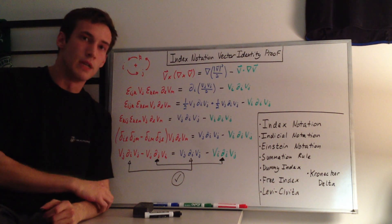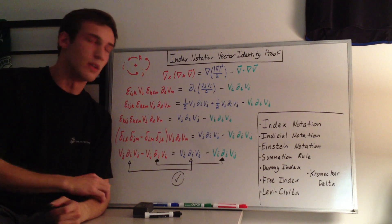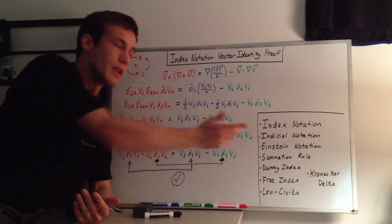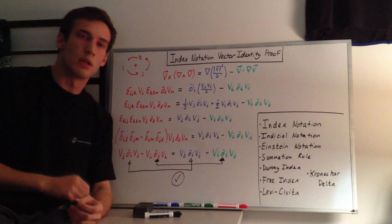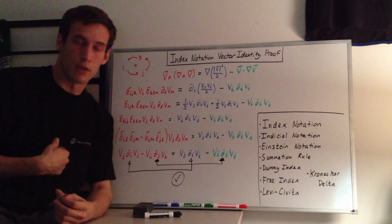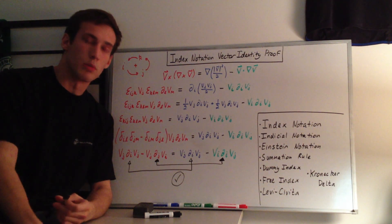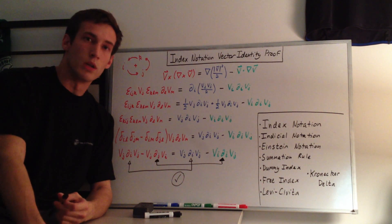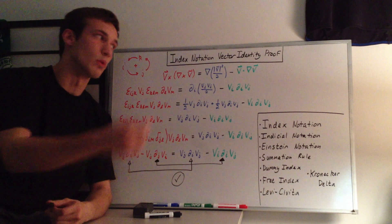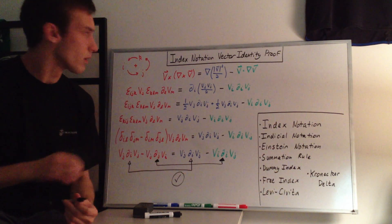I'm not going through the complete basics on index notation, also known as indicial notation or Einstein notation, but I'm putting a couple links to some PDFs that I think are helpful, or explain it in a good way. So those will be in the description of the video if you want to check those out before looking at this, but I'll try to walk through it.